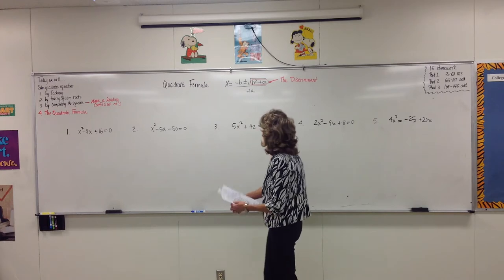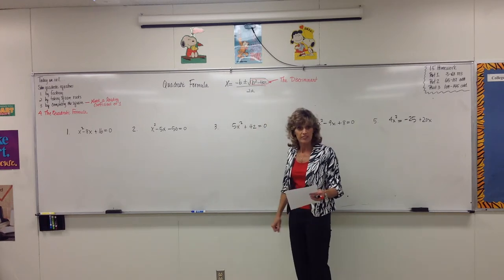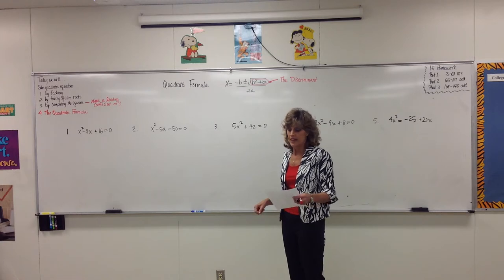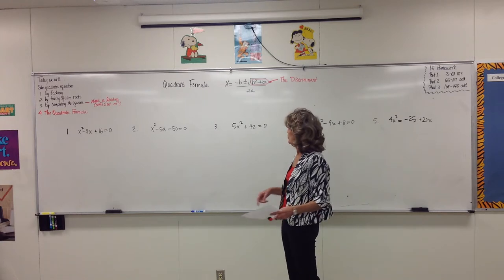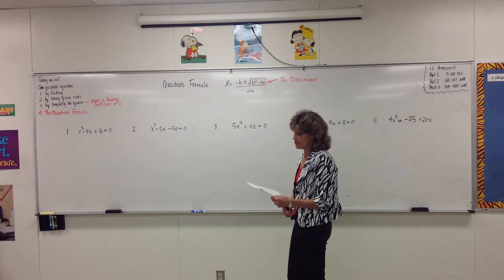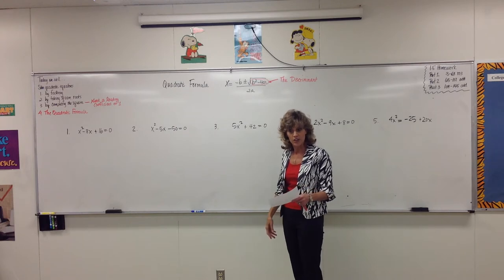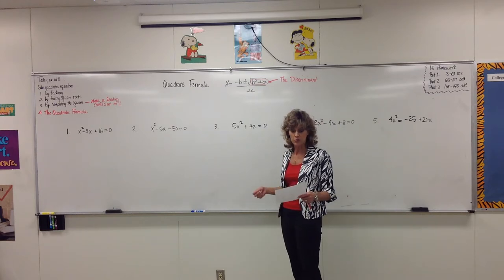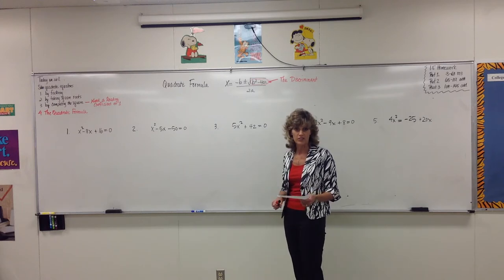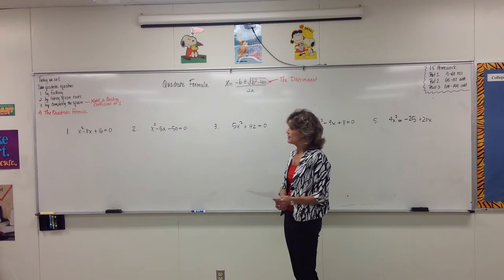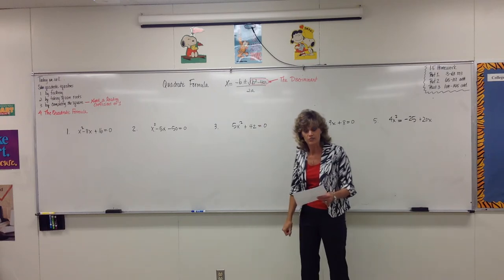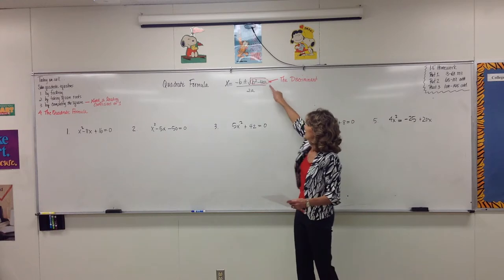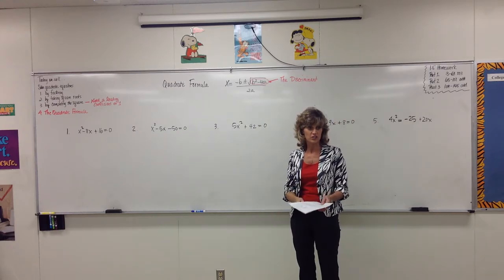If the discriminant — b squared minus 4ac — is positive, there are going to be two real roots, and they will be irrational, meaning they will have a radical involved. If it is positive and also a perfect square, the radical goes away and you get two real rational solutions. If b squared minus 4ac equals zero, there is only one root — it's real, rational, and we call it a double root. If the discriminant is negative, the solutions are complex.